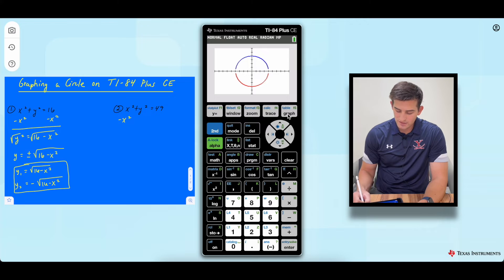So once again, we're going to subtract x squared from both sides. So now we have y squared is equal to 49 minus x squared. Introduce the square root. So y is equal to positive and negative square root of 49 minus x squared.